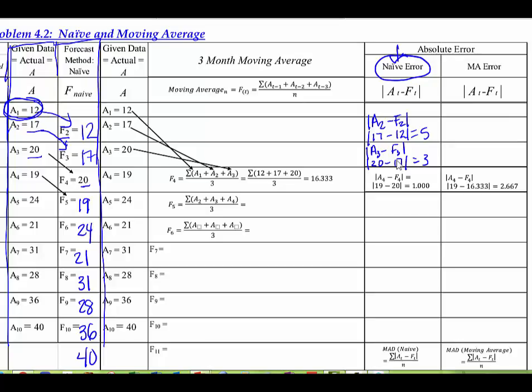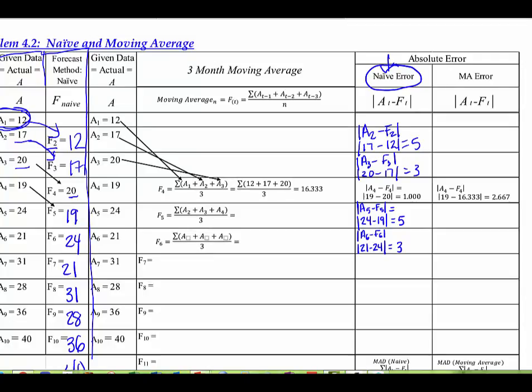We've already done period 4. Let's go on to period 6. You notice that we're taking A6 minus F6, and that's 21 minus 24. But because of the absolute value signs, the number does not become negative — it stays positive. So we end up with 3, because all we're interested in here is the difference between the two, not whether it's positive or negative. So I'm going to go ahead and finish this column out, and then show you how to compute the MAD for the naive model.